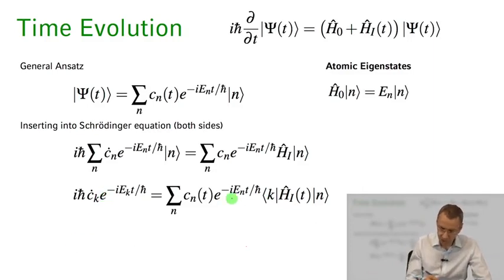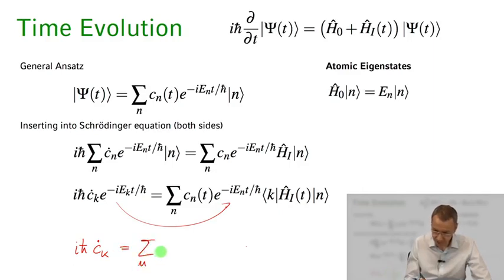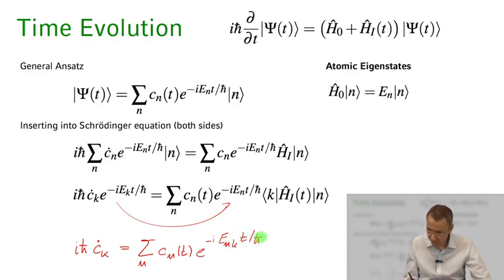I can simplify this a little bit further and basically just bring this exponential over to the other side. So we end up with the following equation: iℏ ck dot equals the sum over all basis states n of cn of t times e to the minus i Enk t divided by ℏ times k HI of t n.